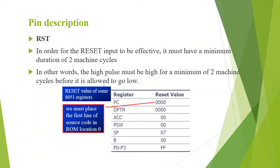The table shows the reset values for different registers in 8051. For program counter and data pointer the reset value is 0000. For accumulator, program status word, stack pointer, and register B it is 00. For IO ports P0 to P3 it is FF. So the first line of source code in ROM location 0 should have the reset value 0000.